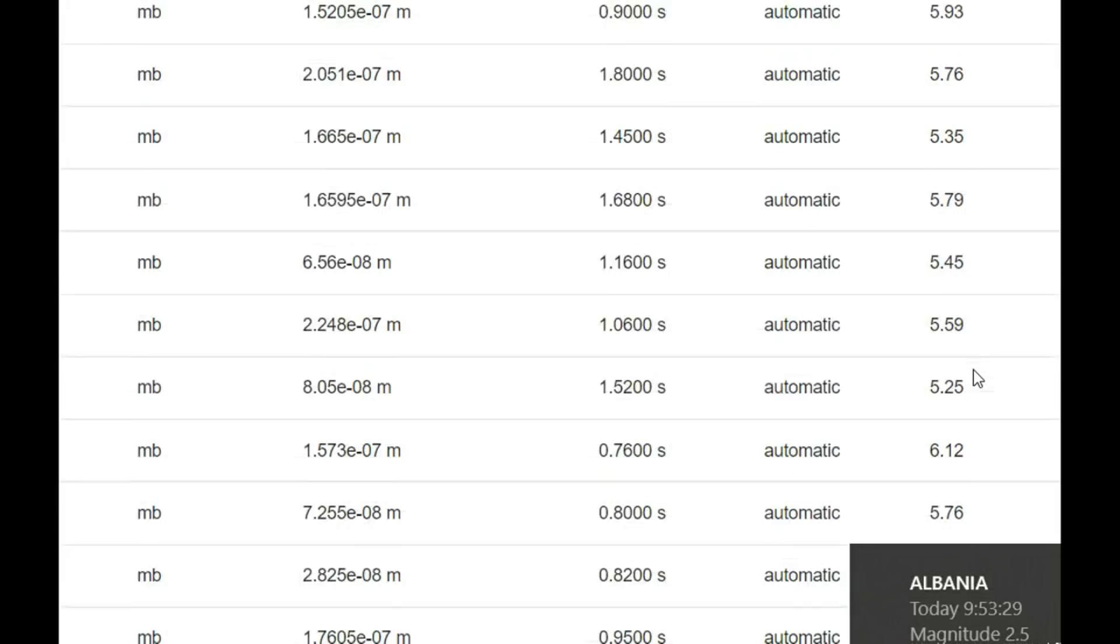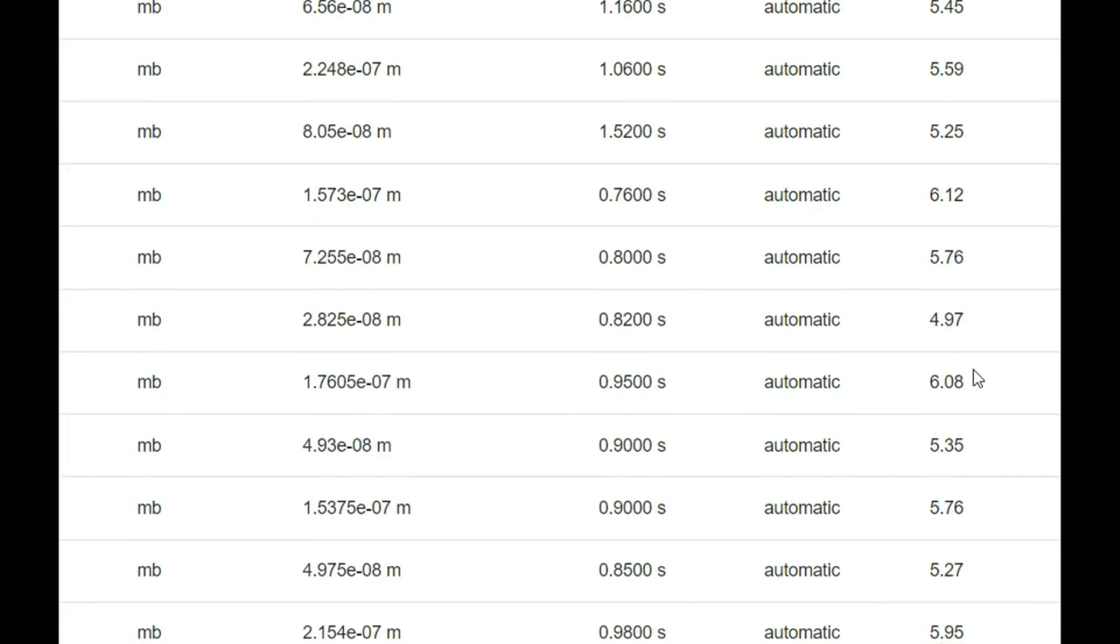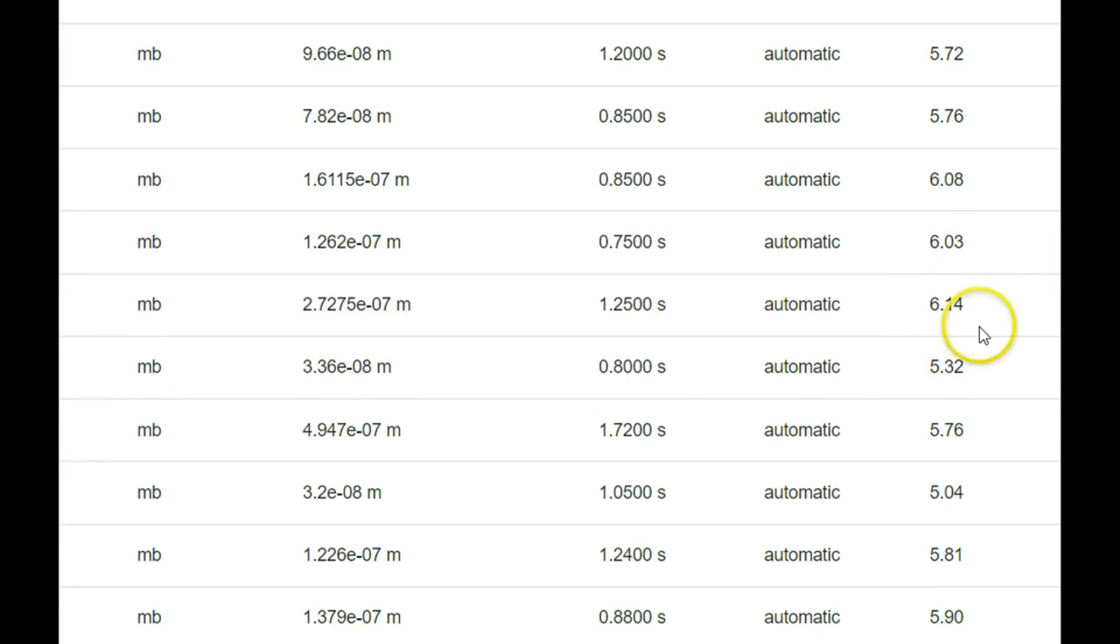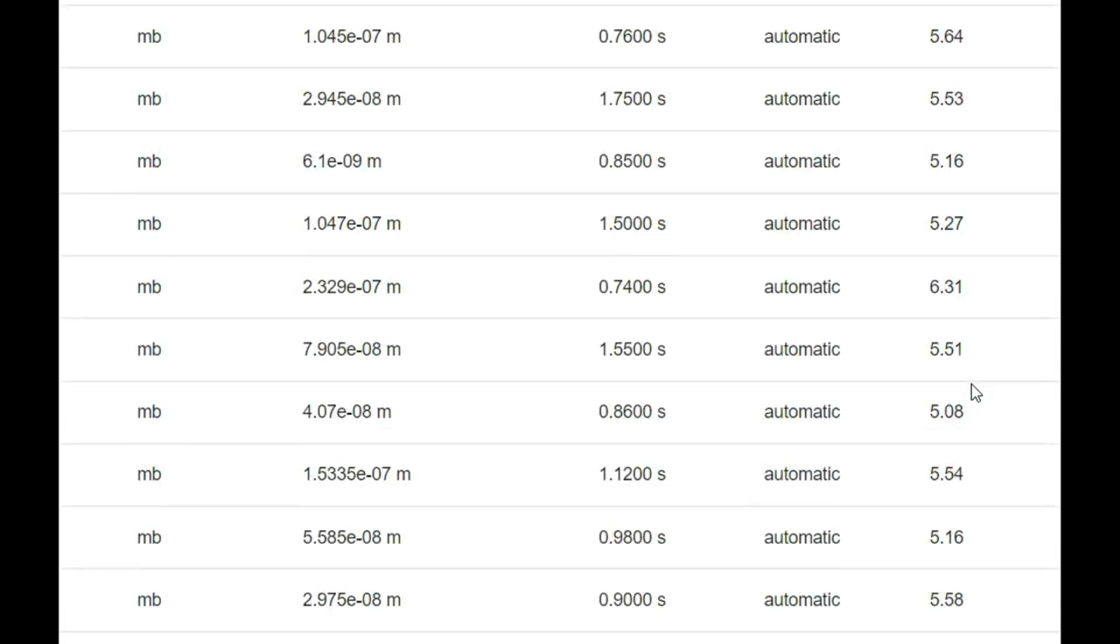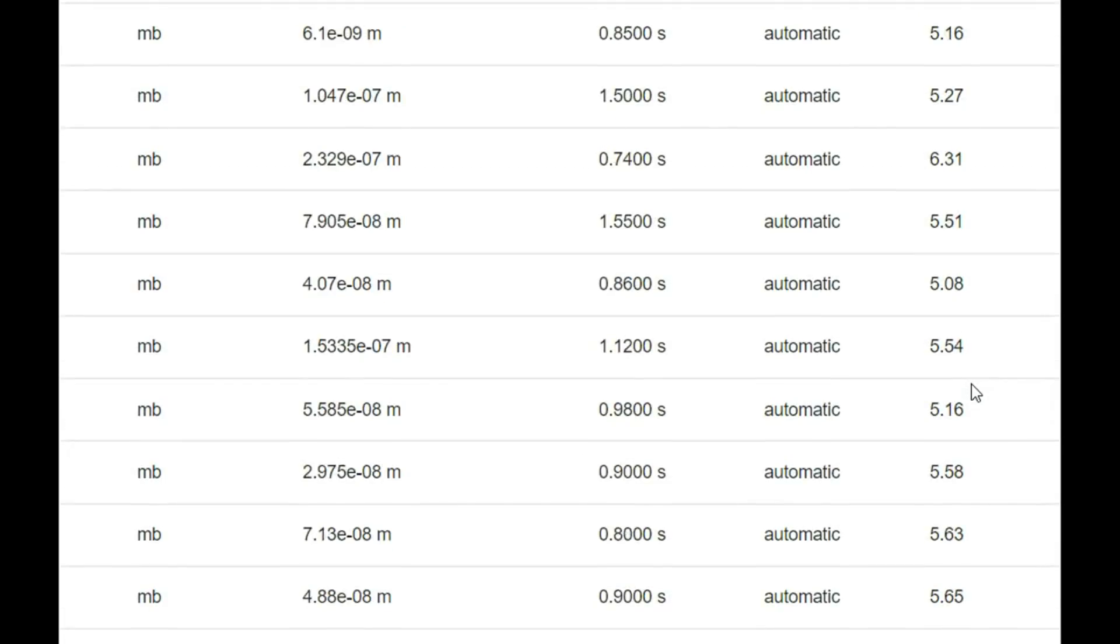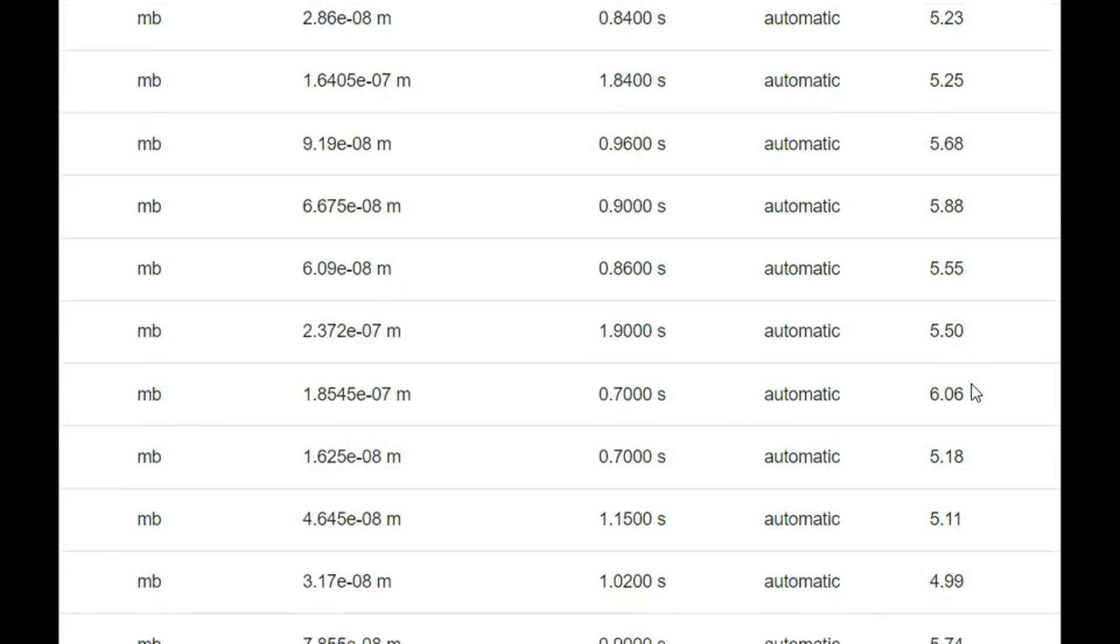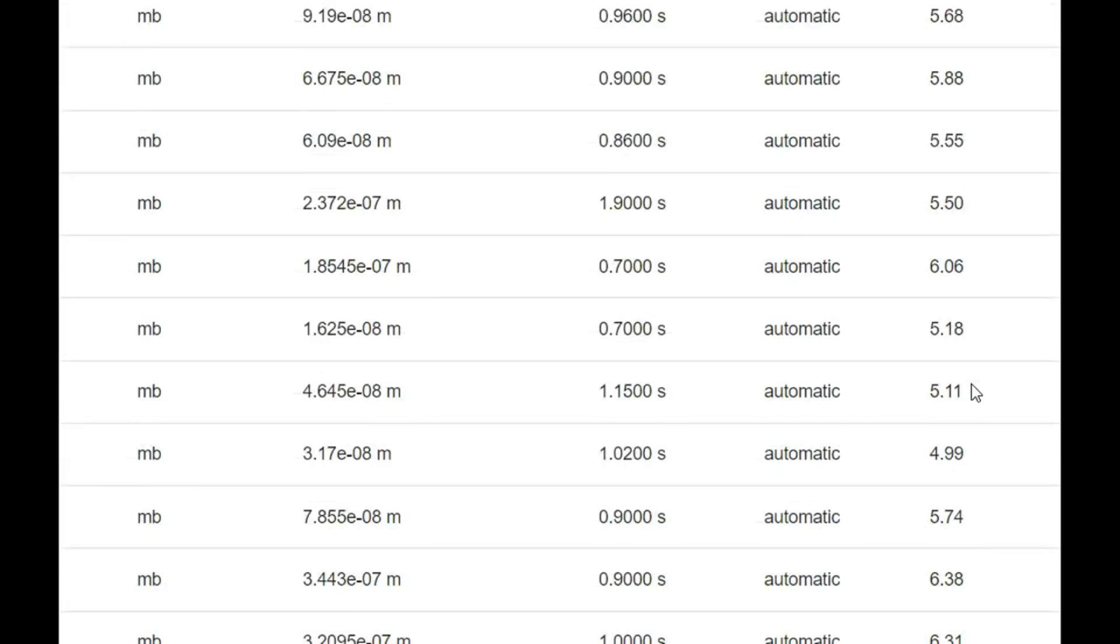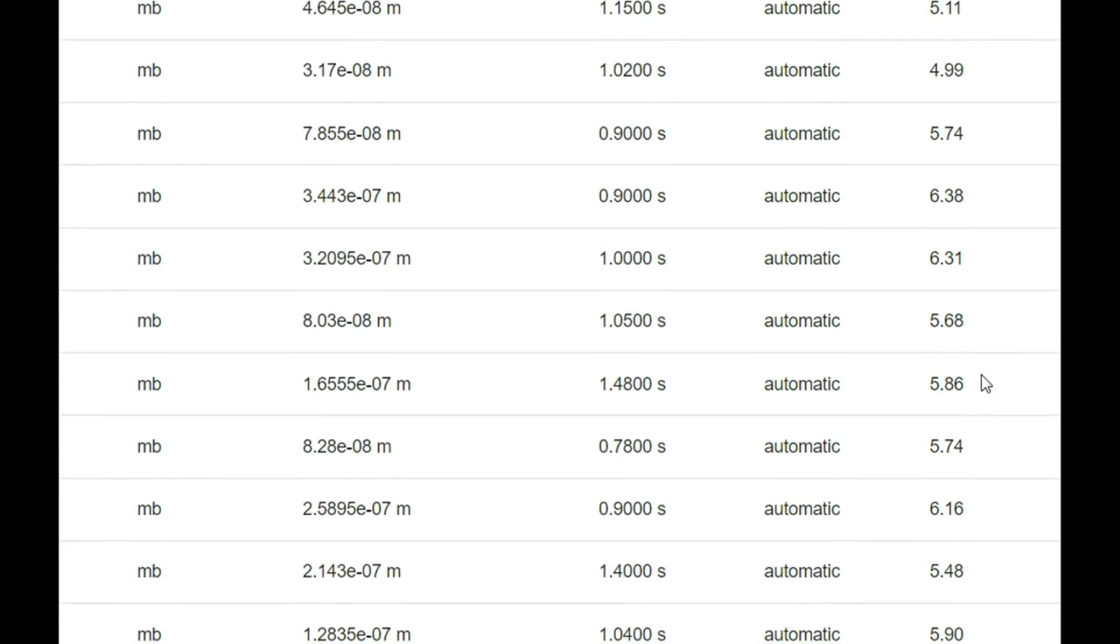You know, the farther the monitor is from where the earthquake occurred, the smaller it would be. 6.12, 6.08, 6.03, 6.14. I don't know why, other than people would ask why has there been an increase in large earthquakes that USGS is downgrading them. 6.38, 6.31.